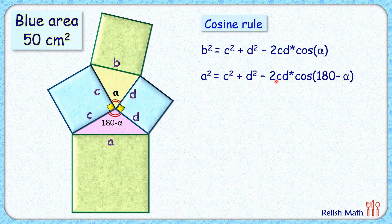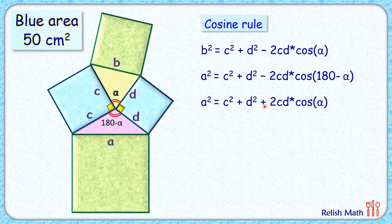Minus two times cd cos of this given angle. This given angle is 180 minus alpha. Now here we'll use this value: cos of 180 minus alpha is nothing but minus cos alpha. So we'll replace this with minus cos alpha. So negative and negative here will become positive.